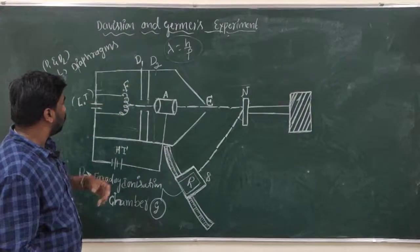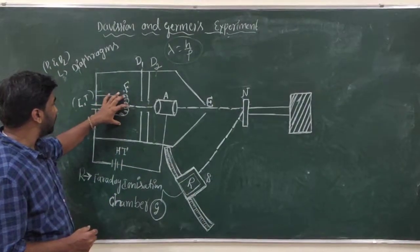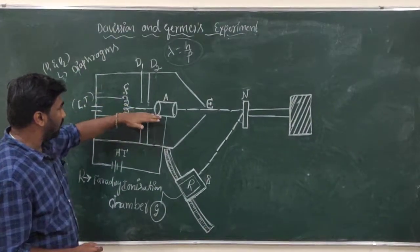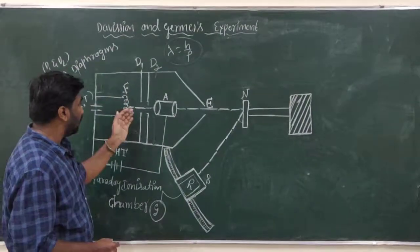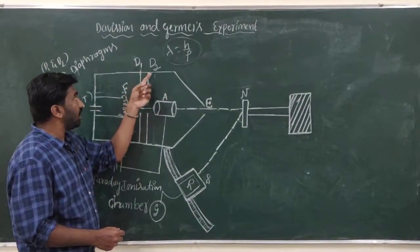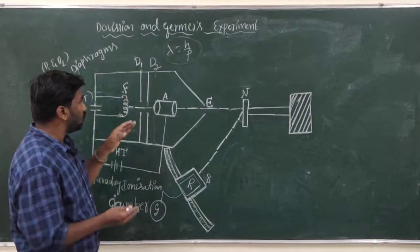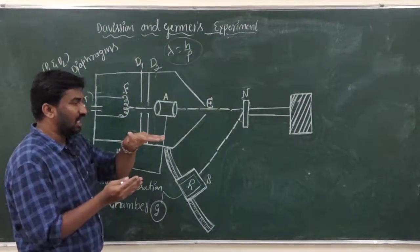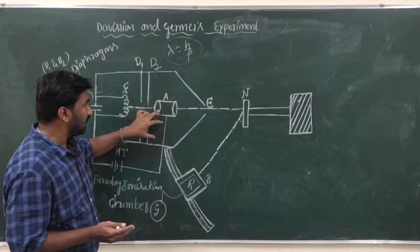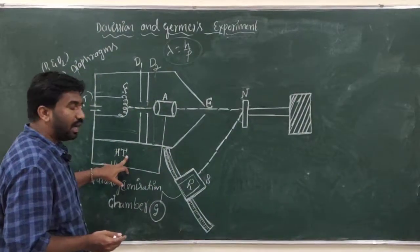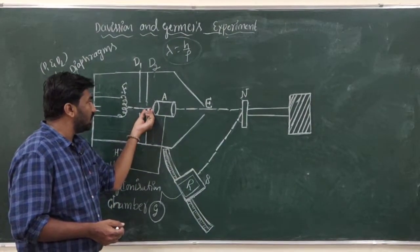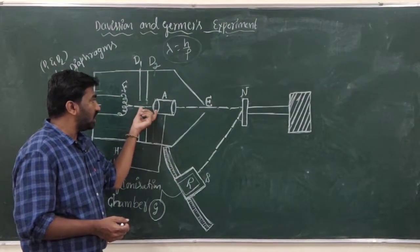This filament is coated with zinc oxide and is heated by connecting a low tension battery LT. When these electrons are ejected from the filament and start moving, they are collimated by using diaphragms D1 and D2. These diaphragms help to collimate the electrons, meaning they move in a single direction. Next, when these electrons enter the aluminum cylinder, which is connected to a high tension battery, a potential is applied, and due to this applied potential, the electrons' speed increases and they get accelerated.